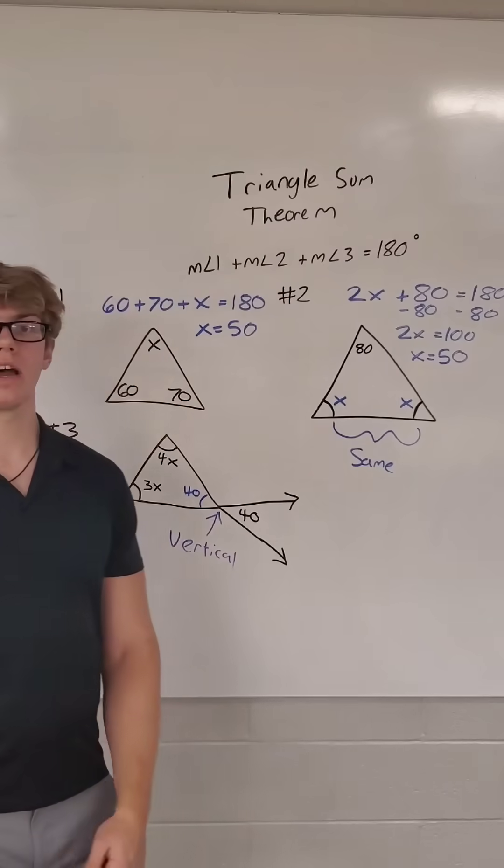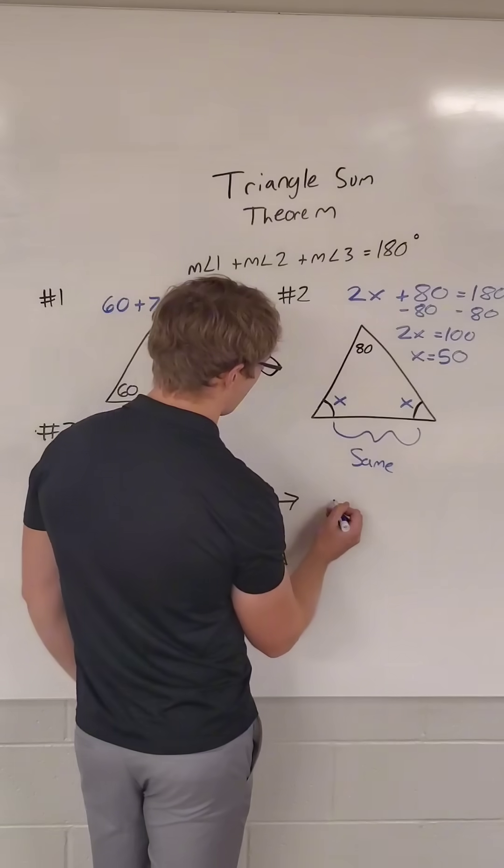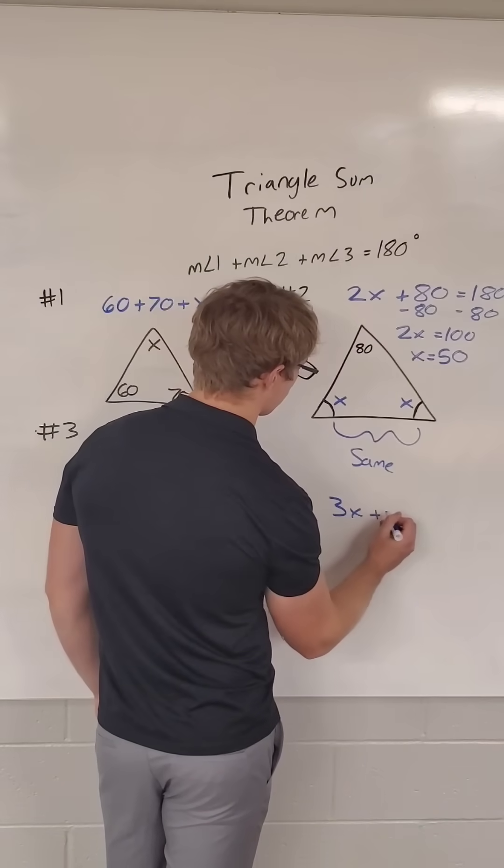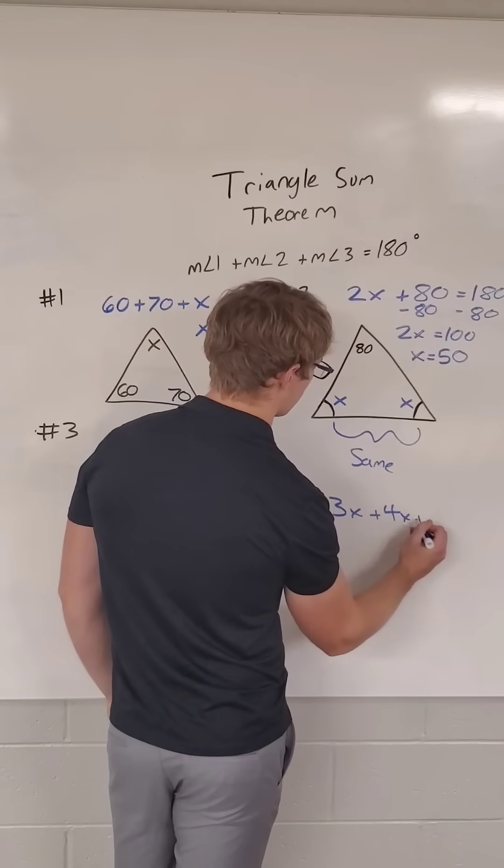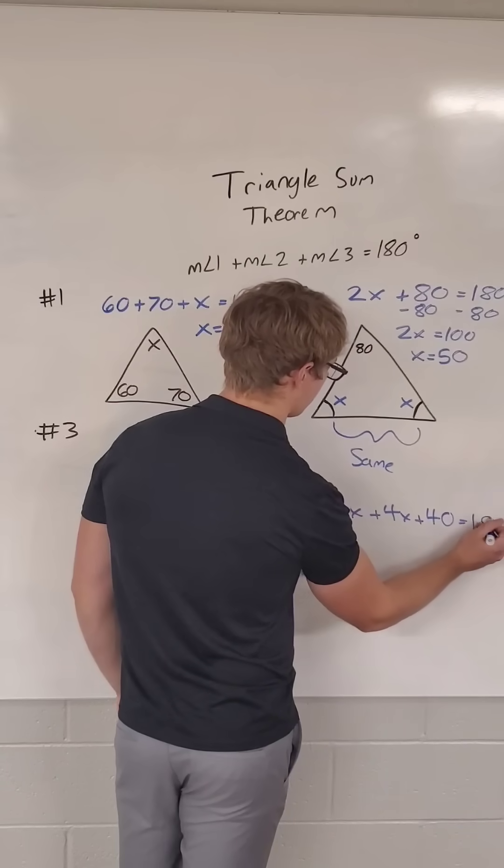Same deal as last time. Let's write our equation. We are adding them up and setting them equal to 180. So we have 3x plus 4x plus 40 is equal to 180.